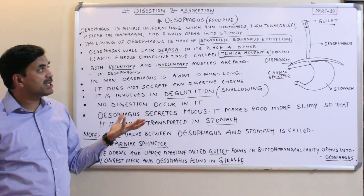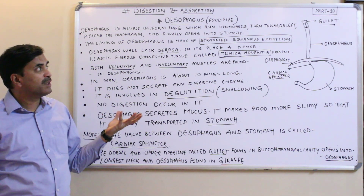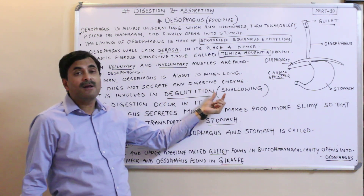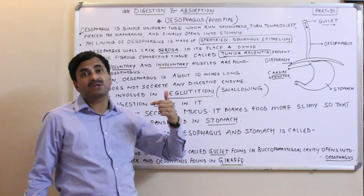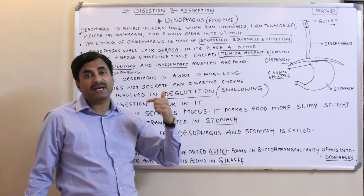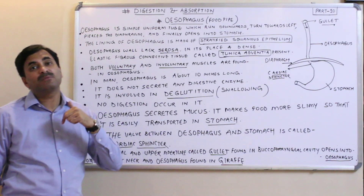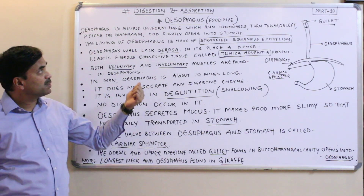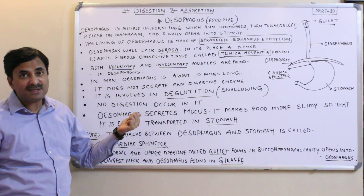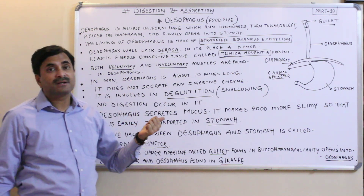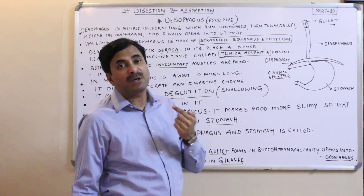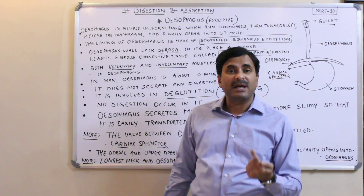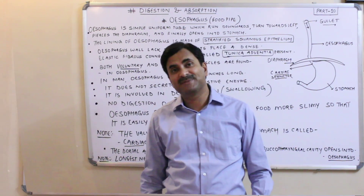The prime function of the esophagus is deglutition — swallowing and transporting food from the upper part of the alimentary canal into the stomach. Today we discussed the esophagus, and in the next upcoming videos we will discuss the remaining parts of the alimentary canal.